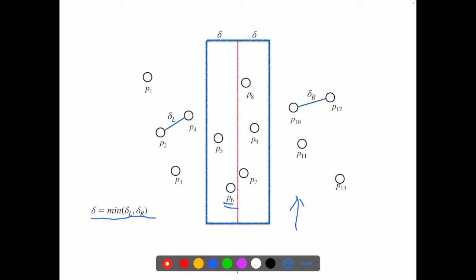It turns out that we can further eliminate some calculations. For the lowest point, p6, in this blue rectangle, we can imagine a purple box, two times delta wide and delta high, with p6 on its bottom edge.